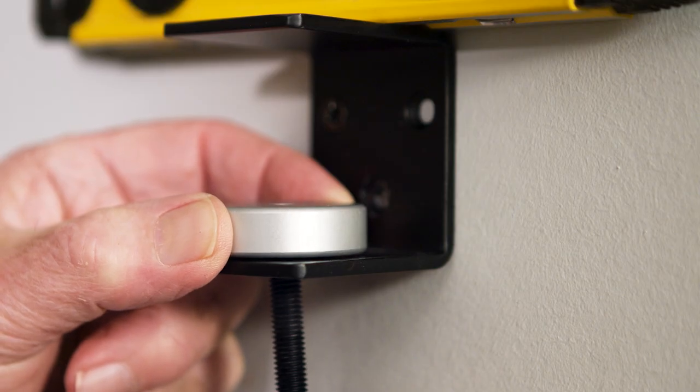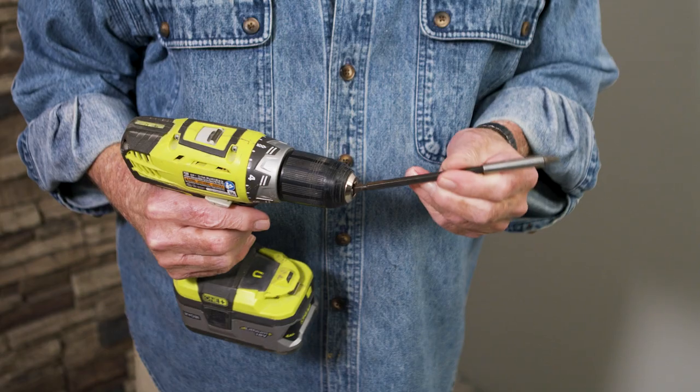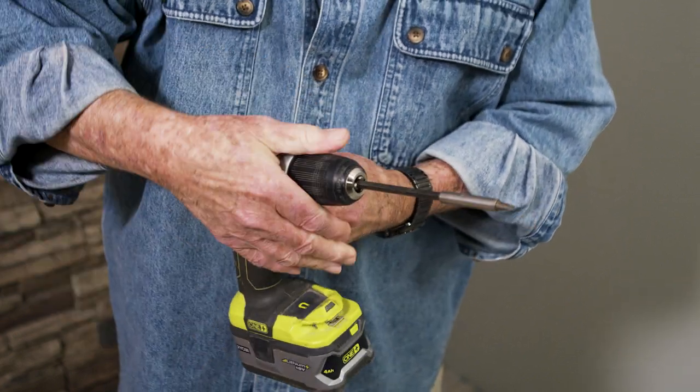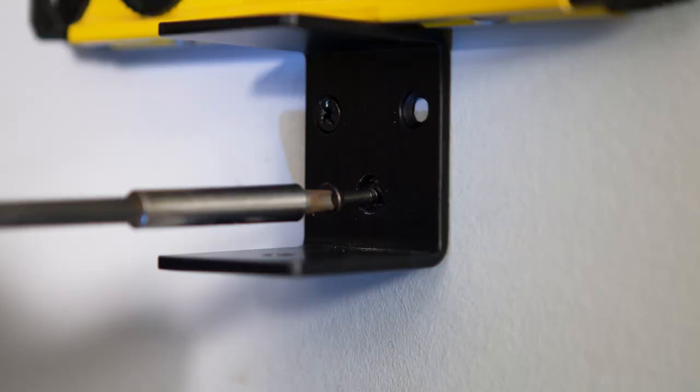I unscrew the movable clamp bracket jaw and insert a bit extender in the drill in order to drive in the second screw.